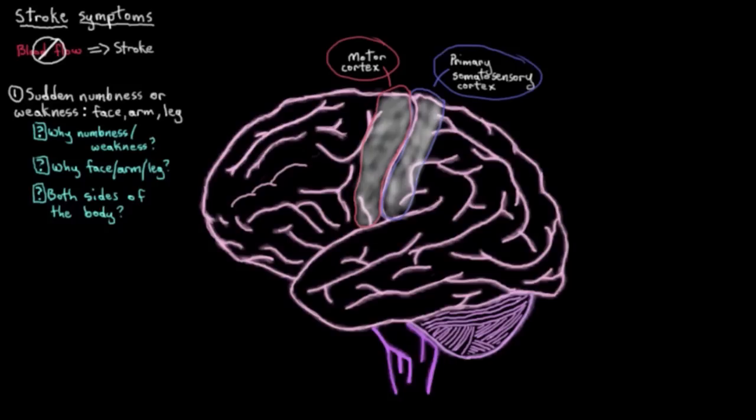Now, why the face, the arm, the leg? Why different parts of the body? Well, the short answer is that it depends on which part of the motor or the sensory cortex gets damaged. Let me put it to you this way. The different parts of the body are sort of represented on the motor and sensory cortices in different places. So this isn't perfect, but conceptually a common way to think of it